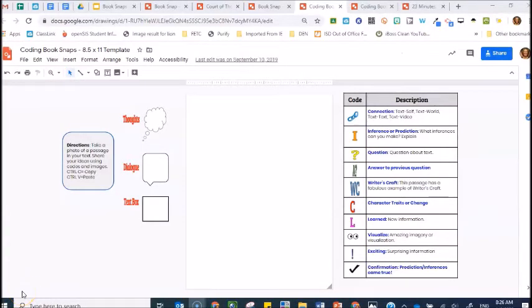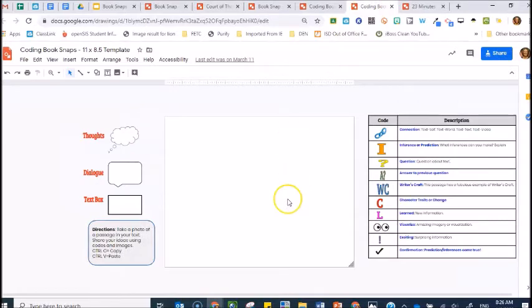Your teacher would have assigned a coding book snap template. There are two templates, one 8.5 by 11 and the other 11 by 8.5. Choose whichever template works for the book snap that you've taken.